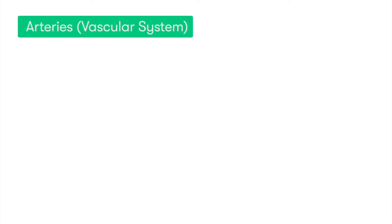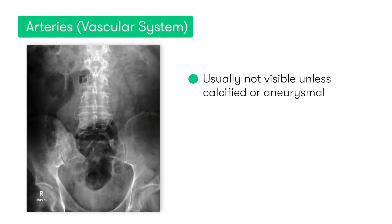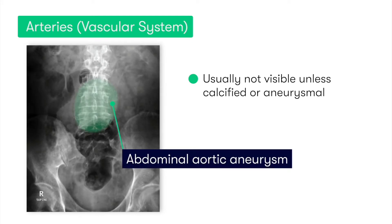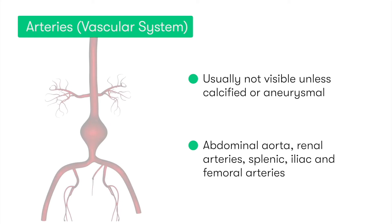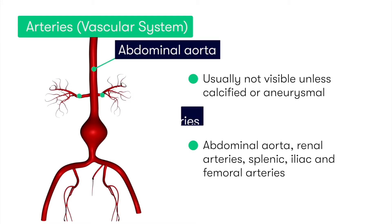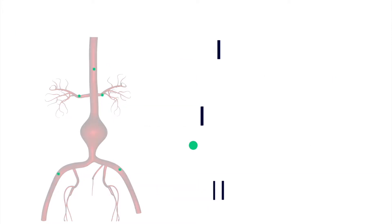Starting with A for arteries: normally we shouldn't be able to see any abdominal arteries or the aorta, so when we can, it's usually because their walls are heavily calcified or the arteries may be aneurysmal. The main vessels to look for are the abdominal aorta, the renal arteries, and the splenic, iliac, and femoral arteries.